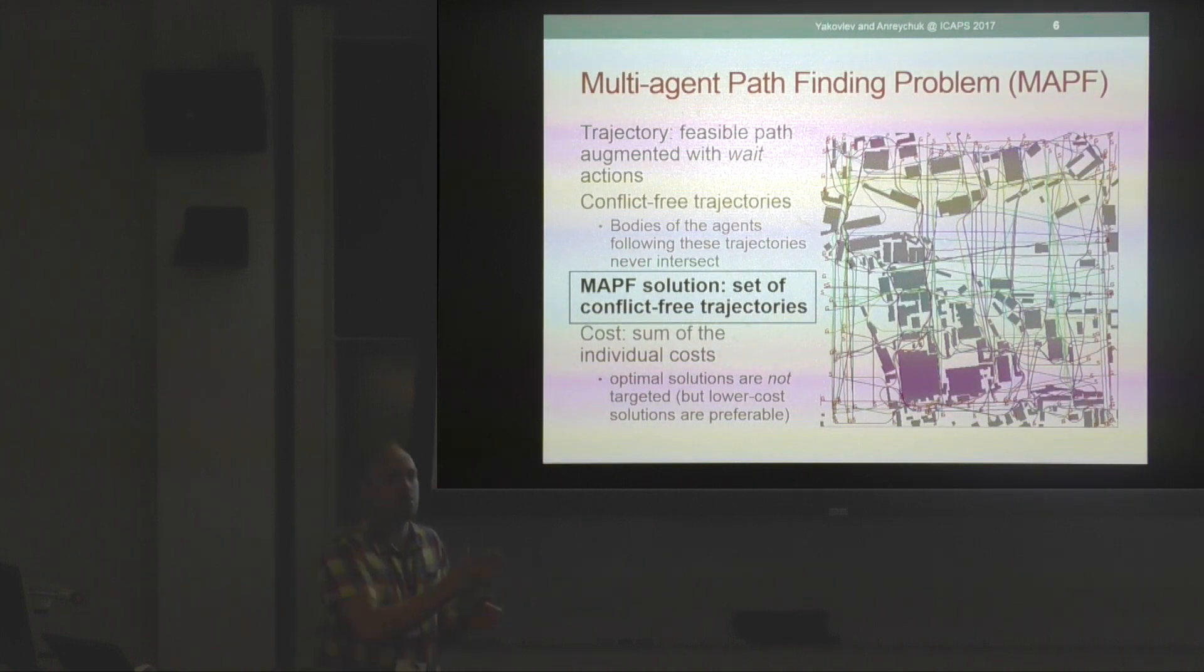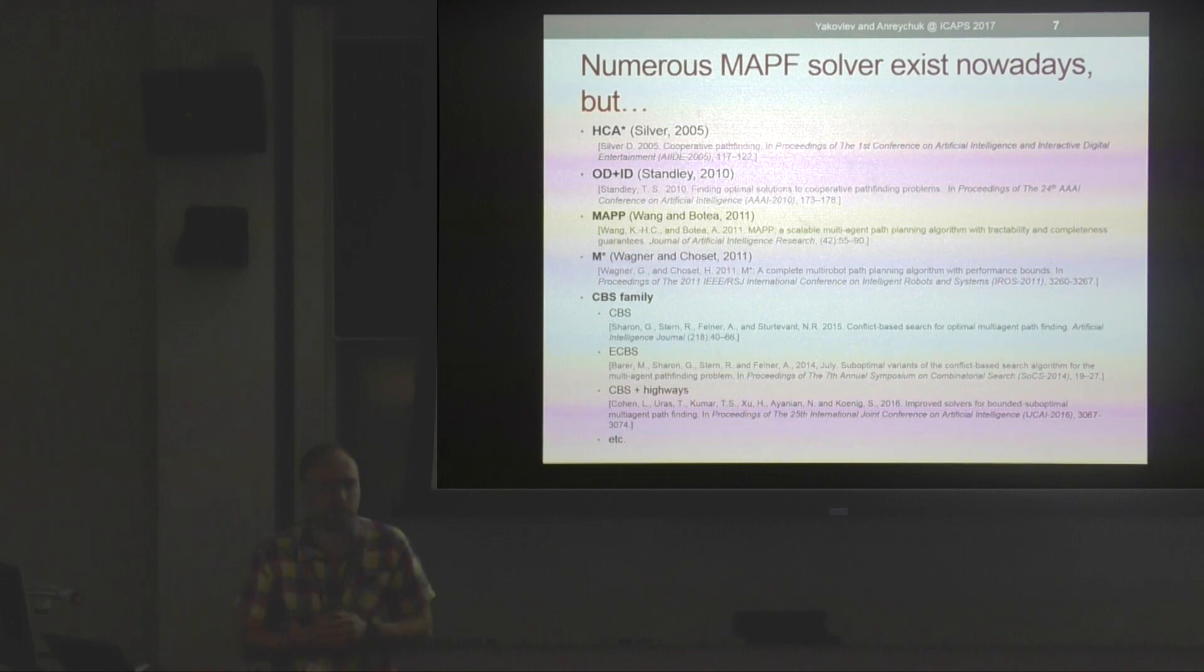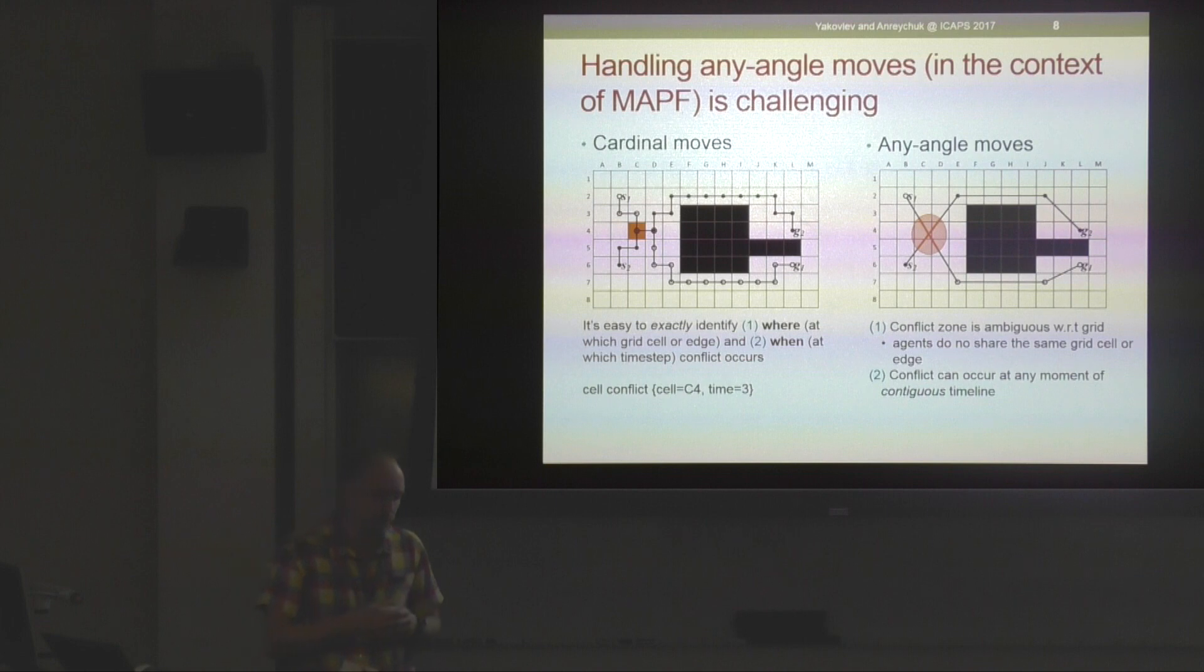Various multi-agent planners exist nowadays, some of them referenced on this slide. The problem with applying these planners to the problem I'm talking about is that typically they rely on the fact that we can exactly identify the grid cell or grid edge where conflict happens. It's not a problem when uniform cost cardinal-only moves are allowed, like on this picture on the right.